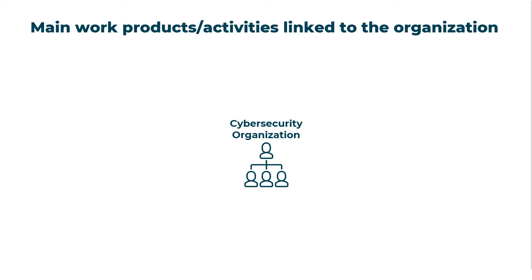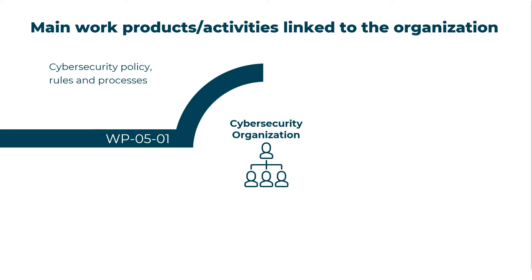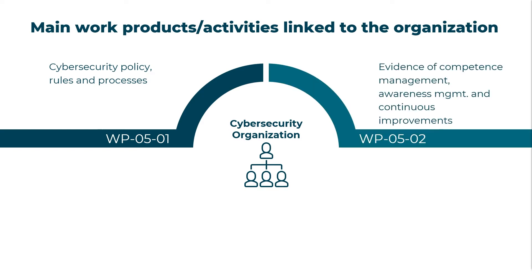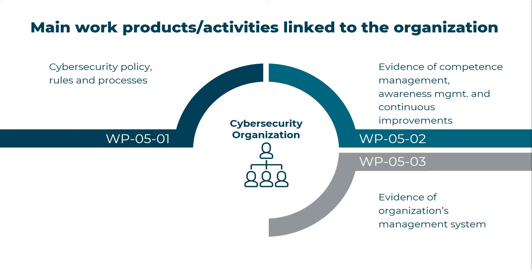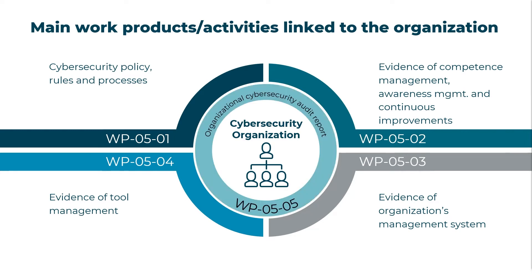Along the establishment of cybersecurity at the organizational level, five major work products must be created in order to ensure compliance to the ISO SAE 21434. This includes the previously mentioned cybersecurity policy, rules, and processes; the evidence of competence management, awareness management, and continuous improvements; the evidence of the organization's management system; and the evidence of tool management. All created work products are checked by an audit. The audit report marks the fifth work product in scope of the ISO SAE 21434.